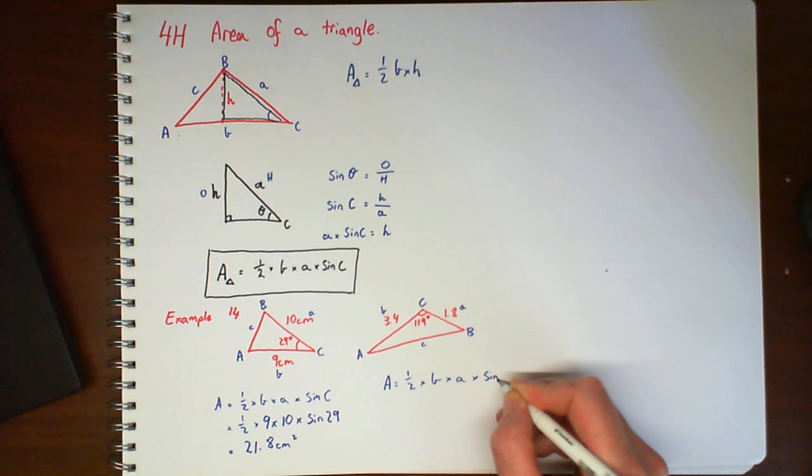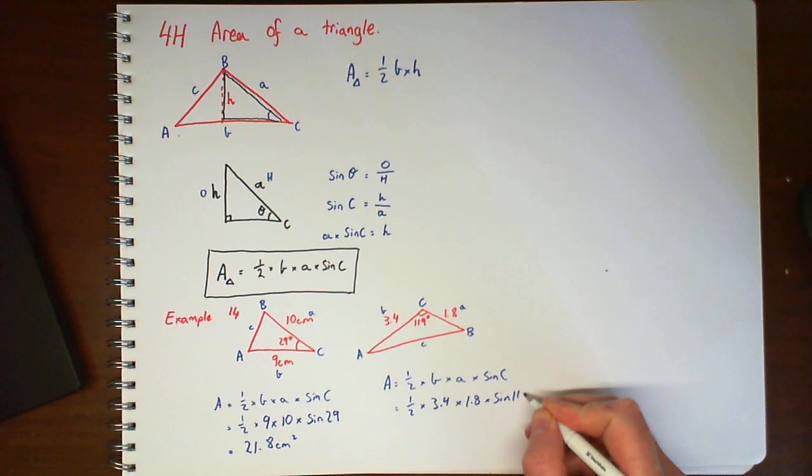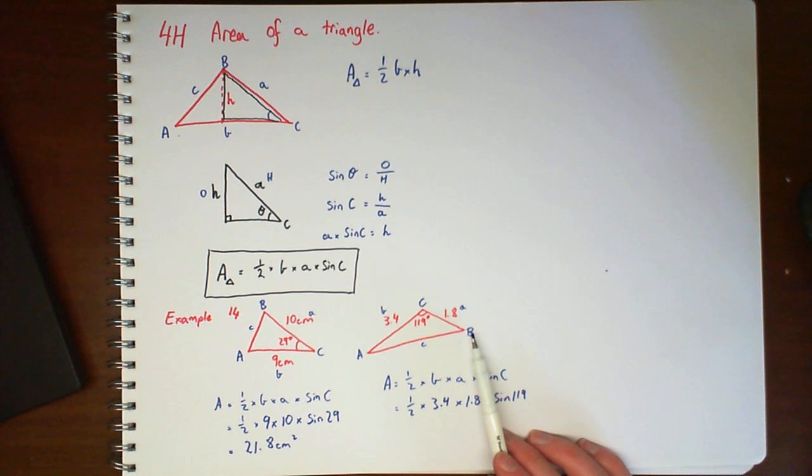Half B times A times sine of C. Half times, this will be 3.4 times 1.8 times sine of C. Now just notice that you can swap the A's and B's around. So if you labelled that as A and that as B, it doesn't really matter. As long as you get the angle right.